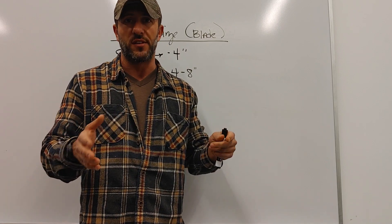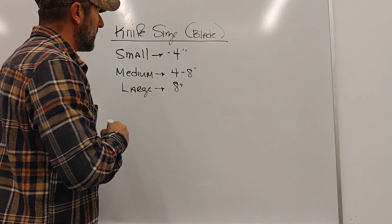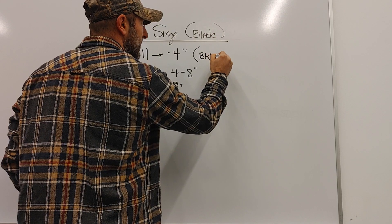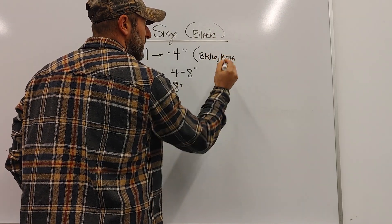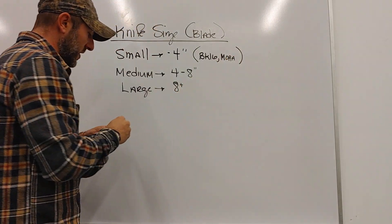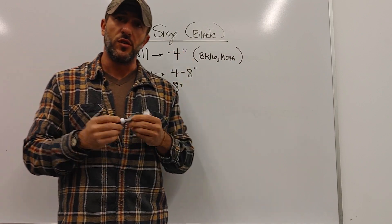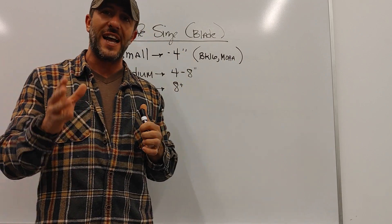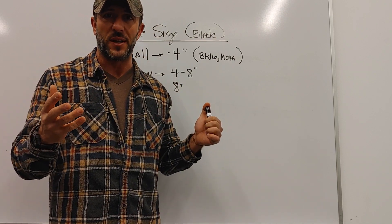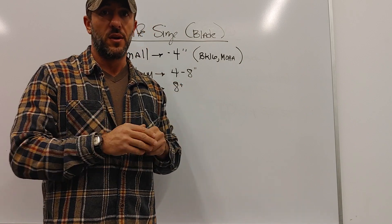So we're talking about a small knife, things like the BK16, your Mora knives, stuff like that. What you'll notice with these smaller knives is usually you're going to have to find a baton to make a baton, because we really don't have any chopping ability to speak of. Any chopping is going to be very laborious.